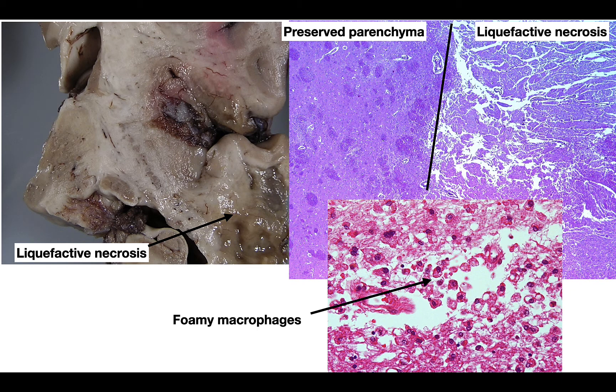With liquefactive necrosis — abscesses are a form but without the neutrophilic infiltrate seen in typical abscesses. Liquefactive necrosis is most commonly associated with the brain. At the top we see a low-power image; to the left is relatively preserved parenchyma and to the right is the liquefactive necrosis, where the tissue is just breaking down. The neurons die, the axons and dendrites die, foamy macrophages come in and engulf them — at the bottom those cells filled with debris are foamy macrophages engulfing myelin and other cellular debris.